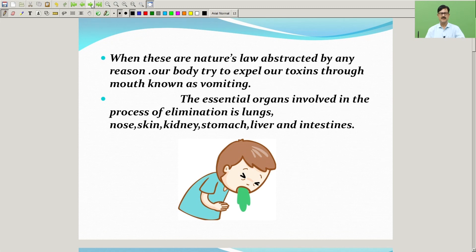When these natural laws are obstructed by any reason, our body tries to expel toxins through the mouth, which is known as vomiting. The essential organs involved in the process of elimination are the lungs, nose, skin, kidney, stomach, liver, and intestines.